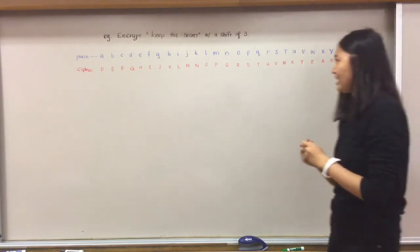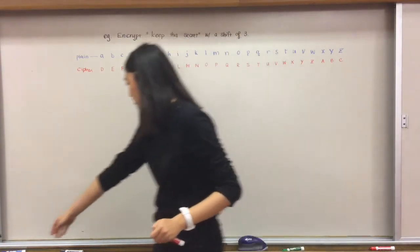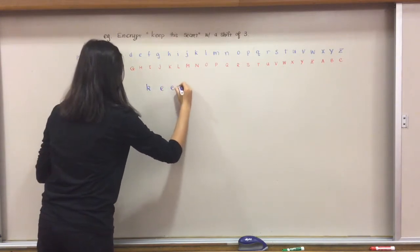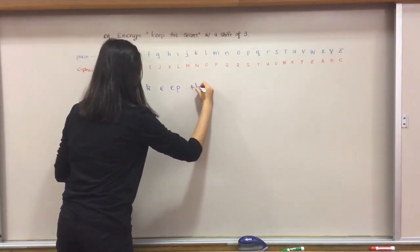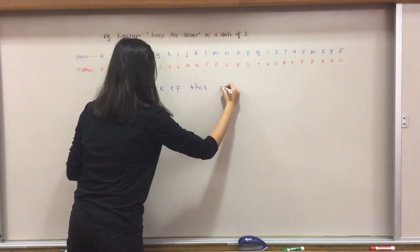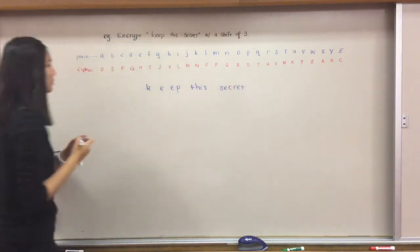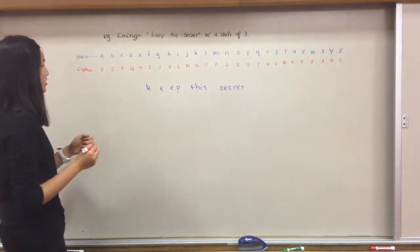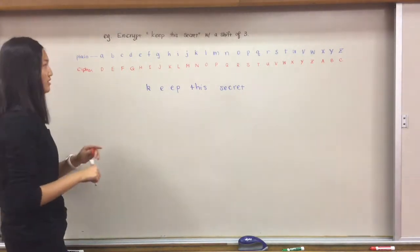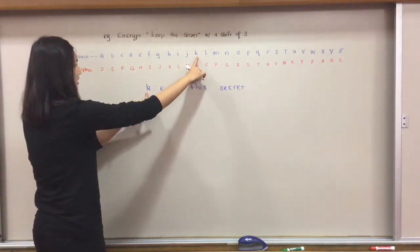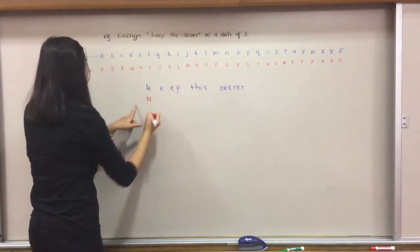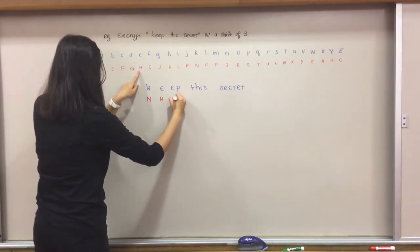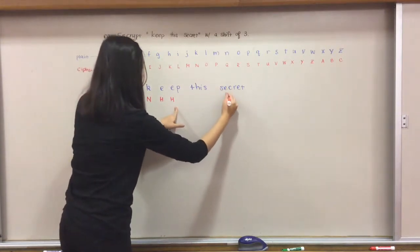Now we're actually going to encrypt this little message. We're going to refer back to this little table that we just made right now, and start figuring out what maps onto what. We can refer here, we see that k is n, so we put an n here, and then e goes to h, we're going to do h, and we can also do the same for the other e's.